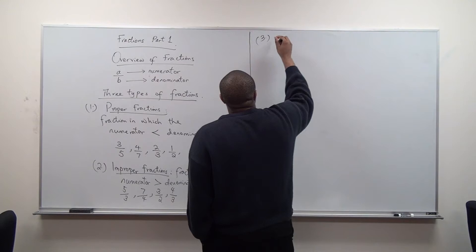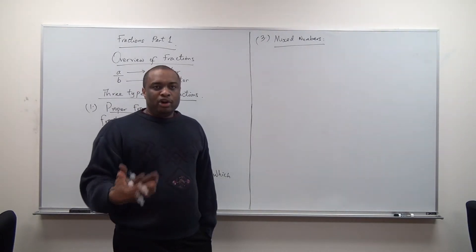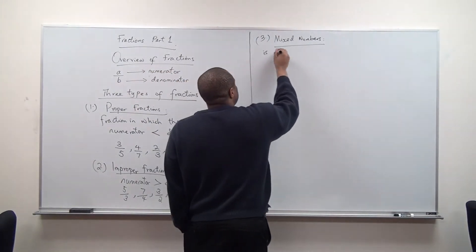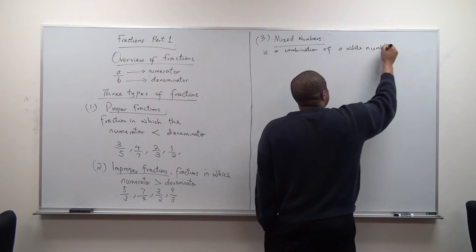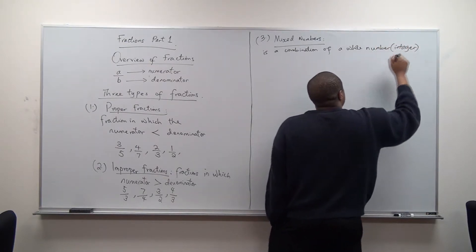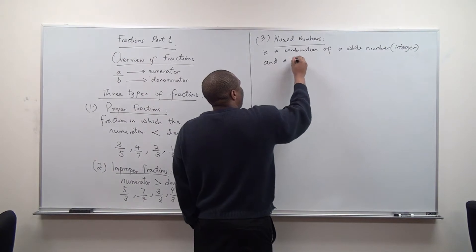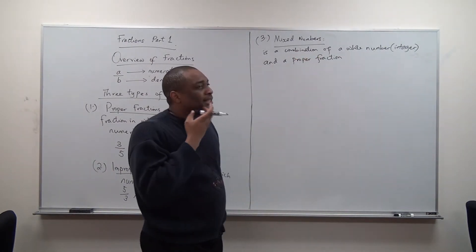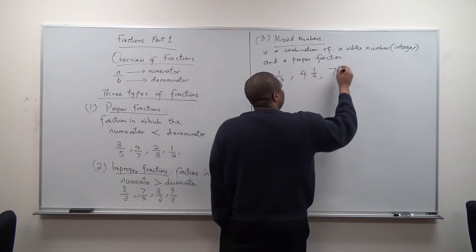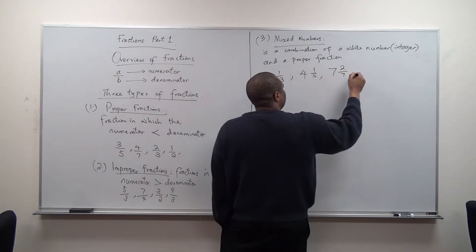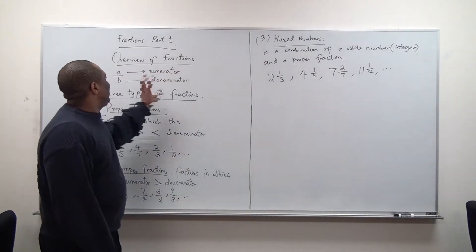The third type is mixed numbers. Mixed numbers consist of a proper fraction and a whole number — also called an integer. Examples of mixed numbers: two and one over three, four and one over five, seven and two over seven, eleven and one over two, and so on.